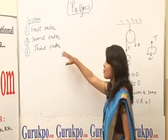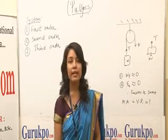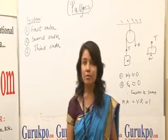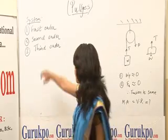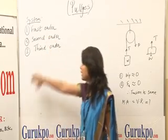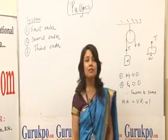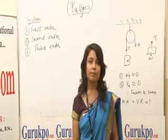Now let us consider the system of the pulley. The system of the pulley is of three types: first, the first order system; second, the second order system; and third, the third order system.